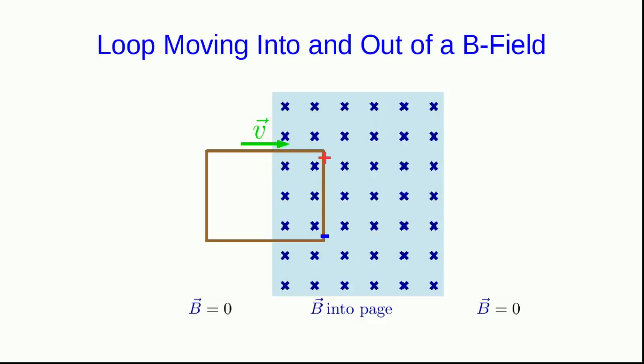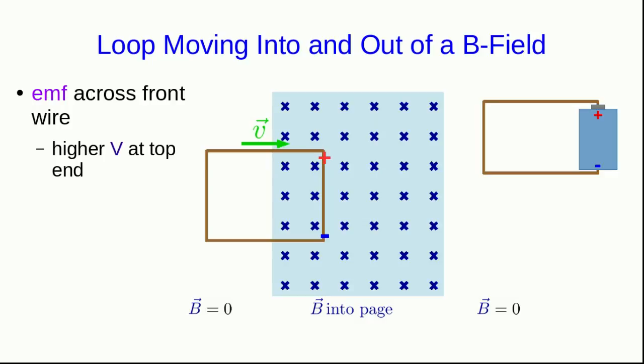Positive charges are being pushed by magnetic forces up to the top end of the wire, and so there's an EMF across the front wire with a higher V at the top end and a lower V at the bottom end. Well, this is exactly like what would happen if there was a battery at the front end of this loop. And exactly the same thing will happen.